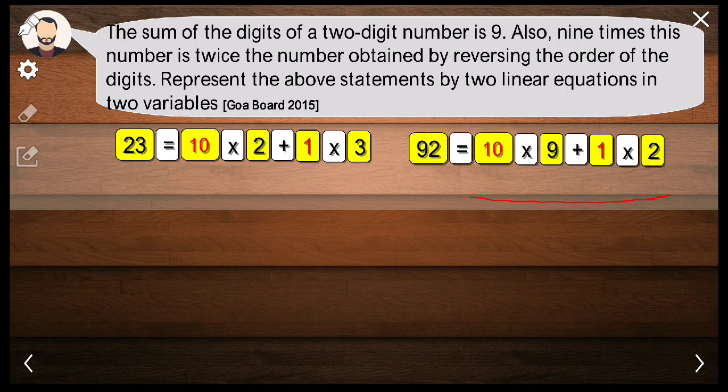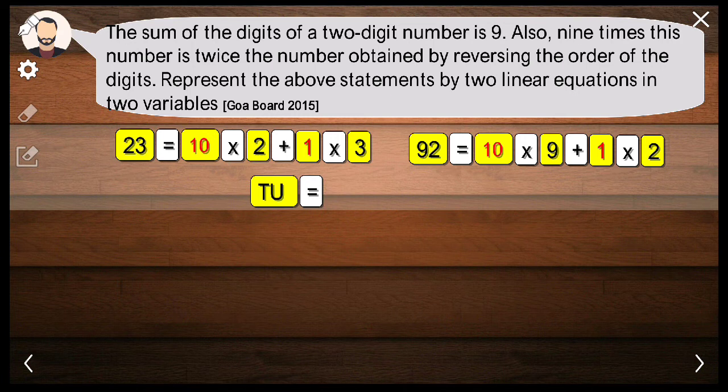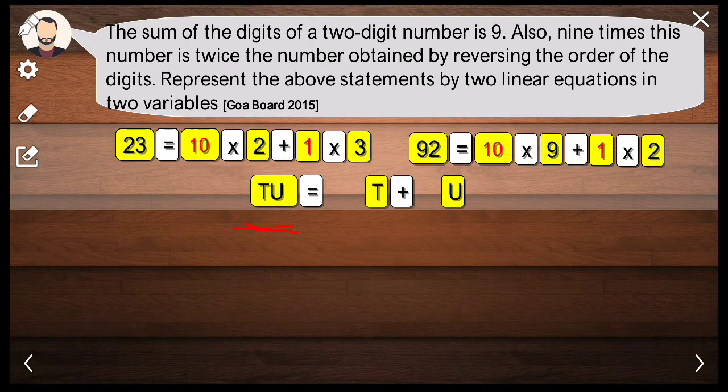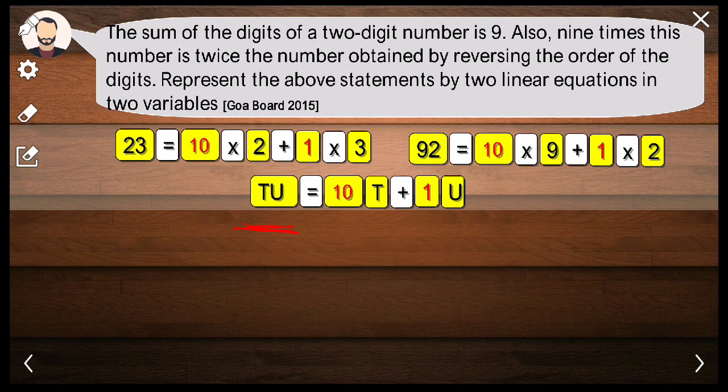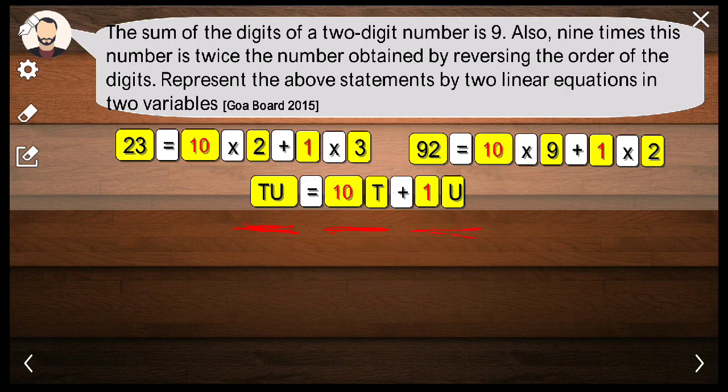If my number is not 23 and 92, but it is 10T plus U, this will be written as 10 multiplied by T plus 1 multiplied by U, telling me U is sitting in the units place. Now this is a number and these are the digits.